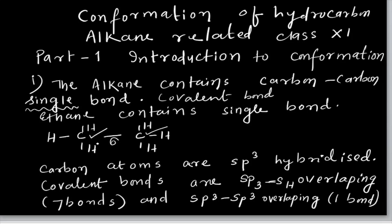How is this sigma bond formed? It is formed by overlapping of sp3 carbon with sp3 carbon. Similarly, the C-H bonds are also sigma bonds. The sp3 hybrid orbital of carbon overlaps with the 1s orbital of hydrogen, giving a sigma bond. So there are two types of bonds: one is sp3–sp3 (carbon-carbon), and the other is sp3–s of hydrogen (carbon-hydrogen).